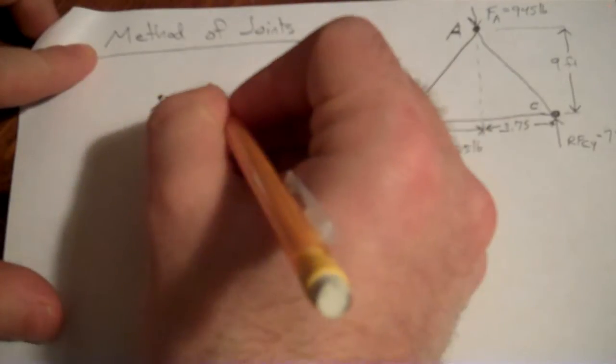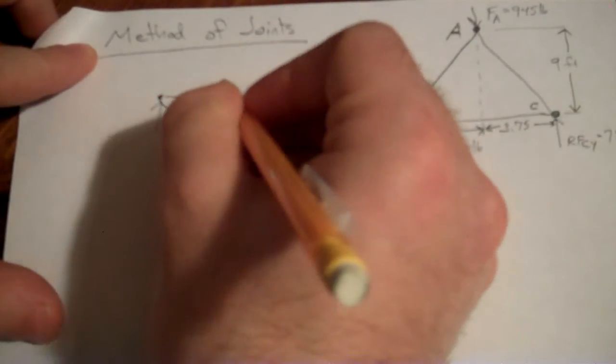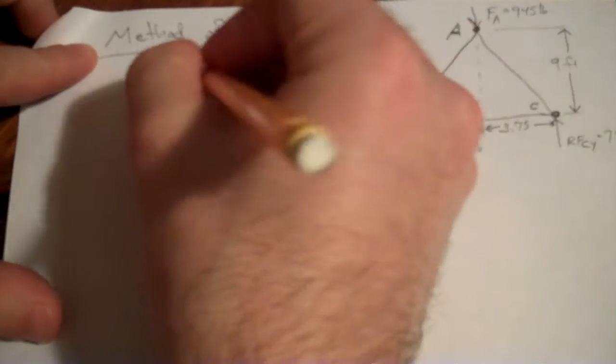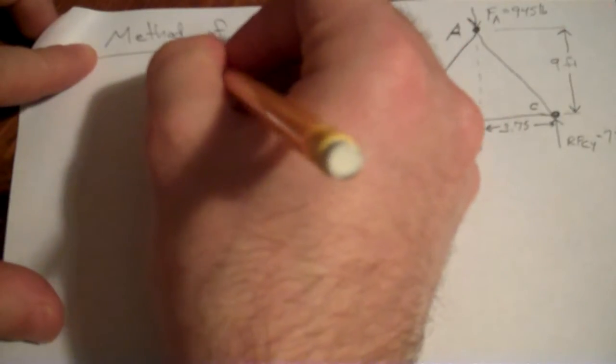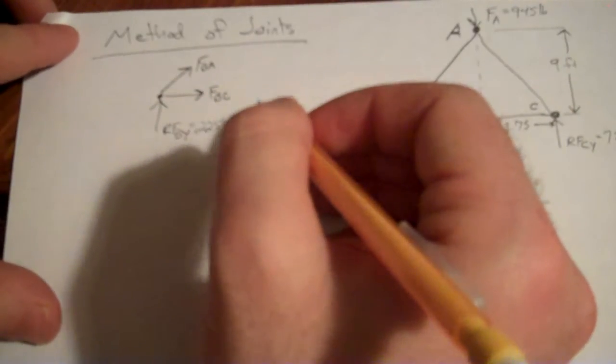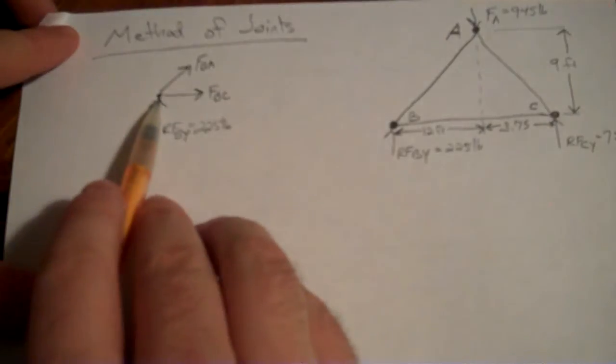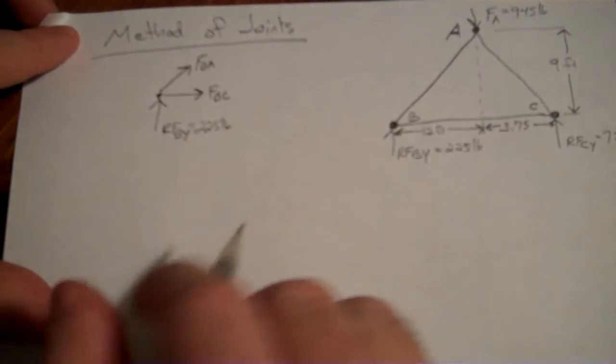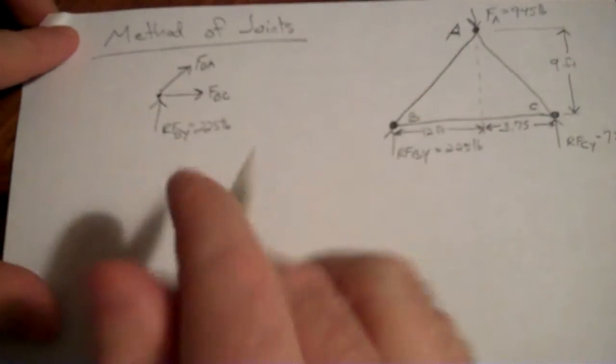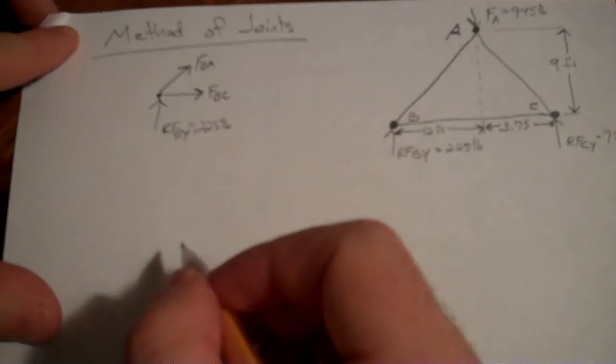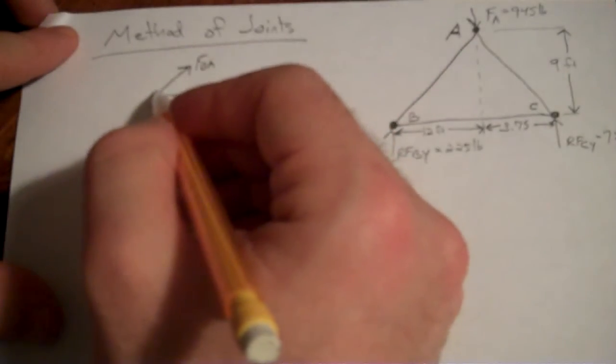So that's force BC, and this is going to be force BA. Now I assume tension because if I'm wrong and it actually comes out to be negative, that just means it's in compression. So I always tend to assume it's pulling outwards, set up my equations accordingly, and the math will tell me whether it's positive—it's in tension—if it's negative, it'll be in compression, which means it would have been actually the other direction.